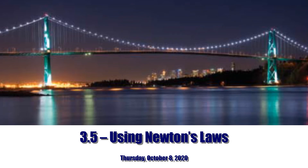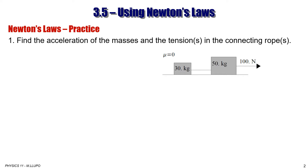Section 3.5, using Newton's laws, is basically a practice solving problems involving Newton's 1st, 2nd, and 3rd laws. In this section, we are going to solve some typical problems using Newton's laws. That symbol mu equals zero is the Greek letter mu, the coefficient of friction, which equals zero. That means friction is negligible. We are going to use these examples again in Chapter 4, but we will include friction, and you will see a difference between with or without friction.